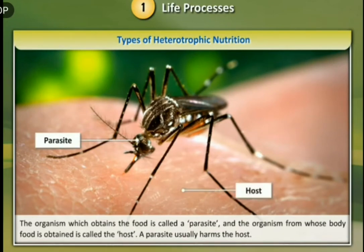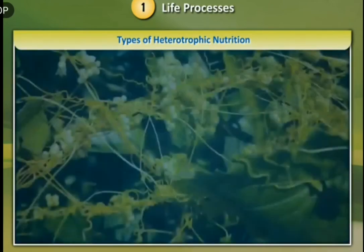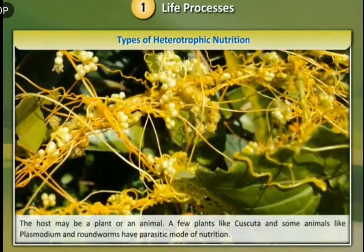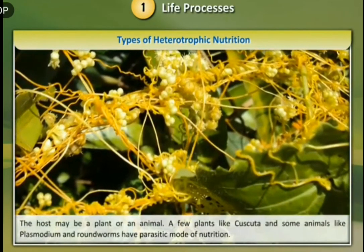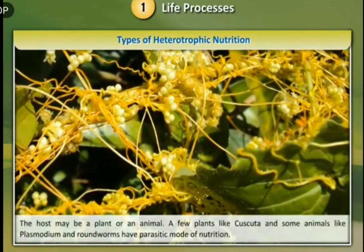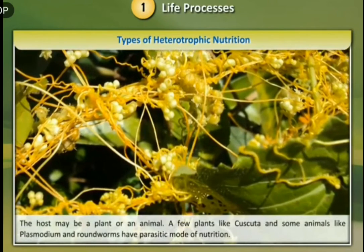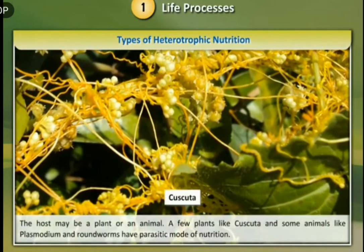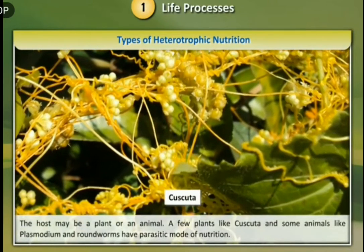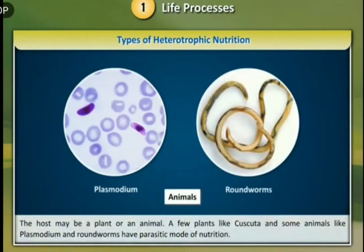A parasite usually harms the host. The host may be a plant or an animal. A few plants like cuscuta, and some animals like plasmodium and roundworms, have a parasitic mode of nutrition.